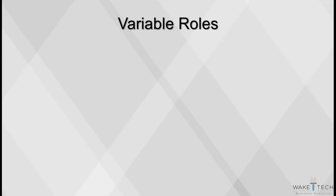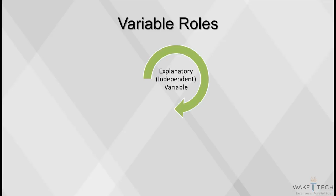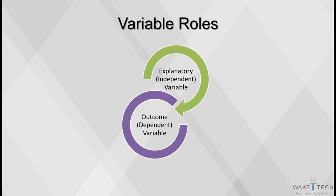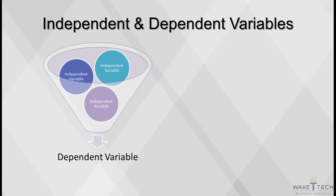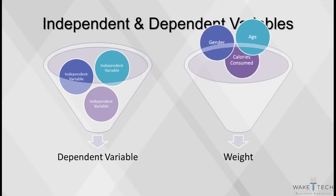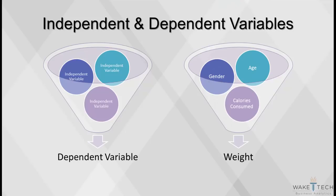Variables have two possible roles. The first is explanatory — also called features or independent variables — which are used as inputs to explain the variation in the outcome variable. The second role is outcome — also known as a target or dependent variable — which measures the output or impact being studied. Most studies have many independent variables and one dependent variable. For example, a person's weight could be a function of age, gender, and calories consumed. Fuel efficiency is a function of car size, weight, and number of cylinders.